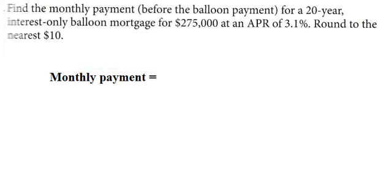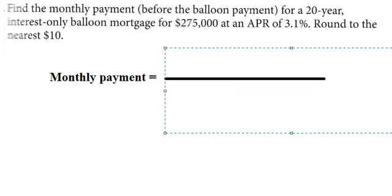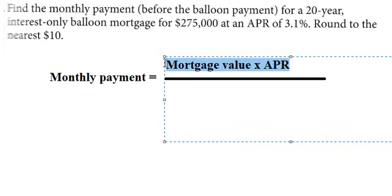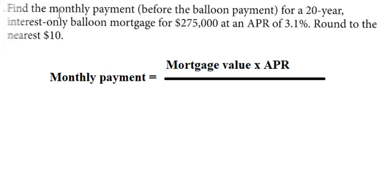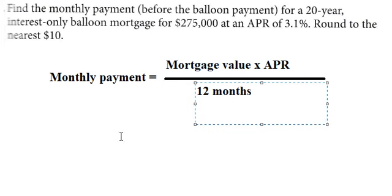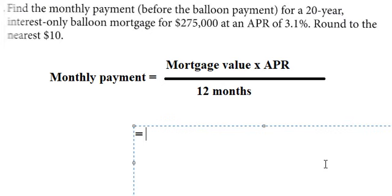We have the mortgage value, and we multiply by APR. This is for one year, so this is a yearly payment. But since the question is about monthly payments, we need to divide by 12 months, and we have the final answer.